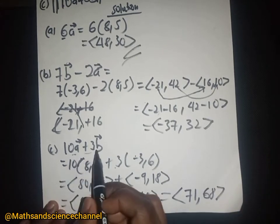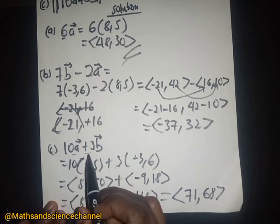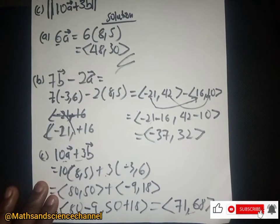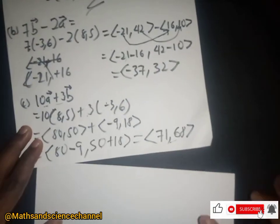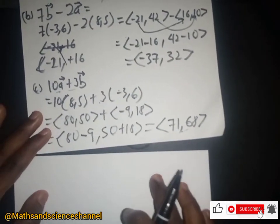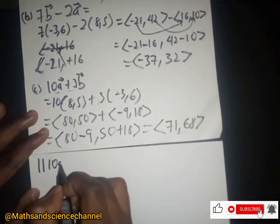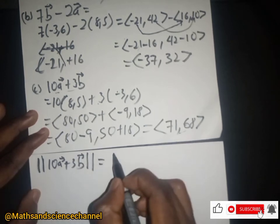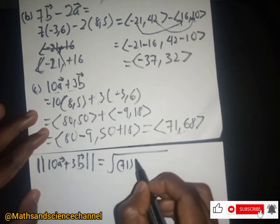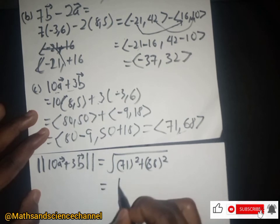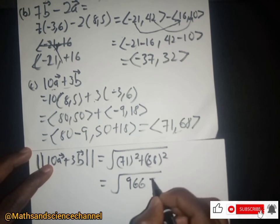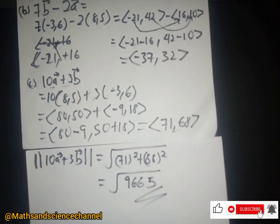Now that we have computed the vector inside the magnitude, we find the magnitude. The magnitude of 10a + 3b is the square root of 71² plus 68². This gives us the square root of 9665, which equals approximately 98.31.